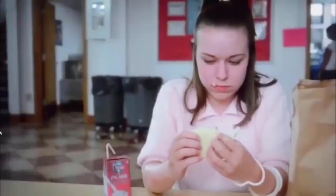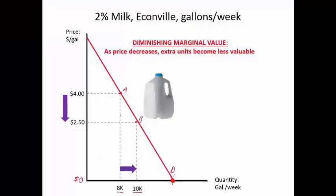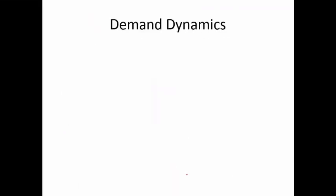Think about it: if milk were extremely cheap — a dollar a gallon, 50 cents, a dime a gallon — how much would you buy? Well, there's a finite amount. The demand curve intersects the quantity axis at a price of zero; there's a finite amount of milk you can take home, store in your refrigerator. The biggest limiting factor is how much you can actually use. As price goes down quantity increases, but only to a point — extra units become less and less valuable.